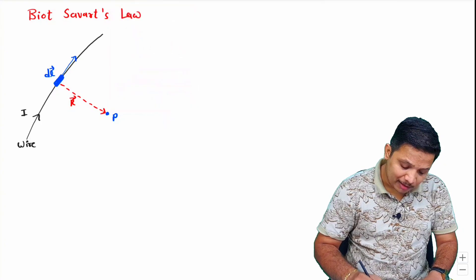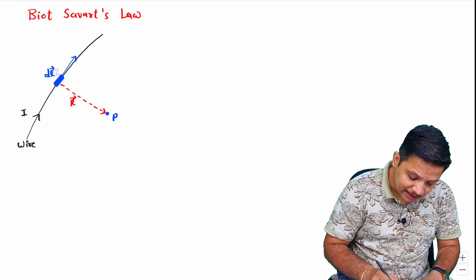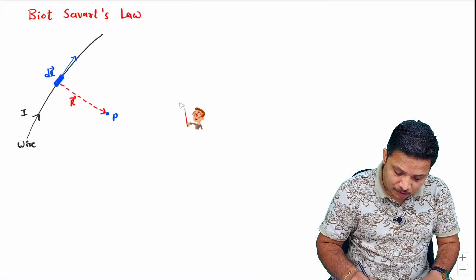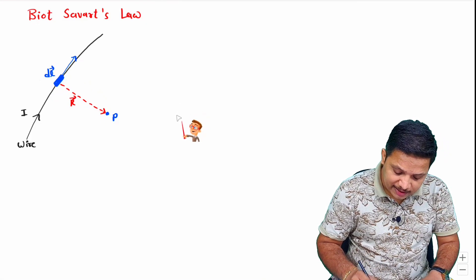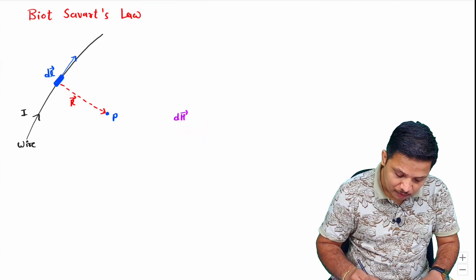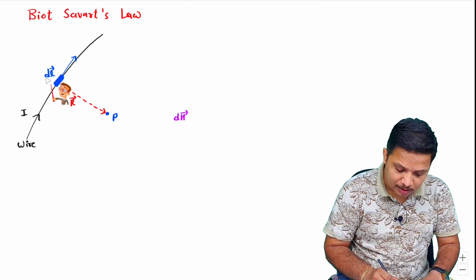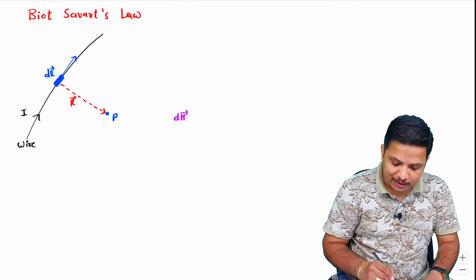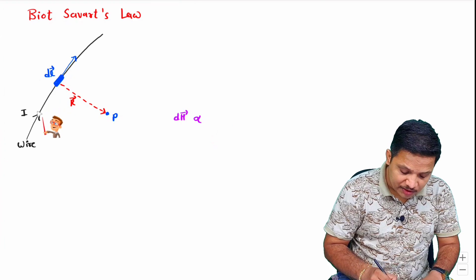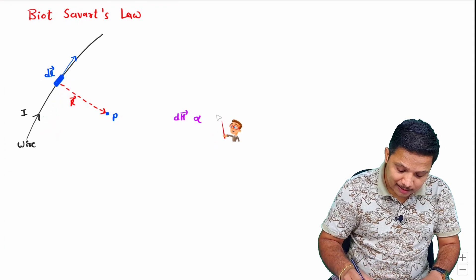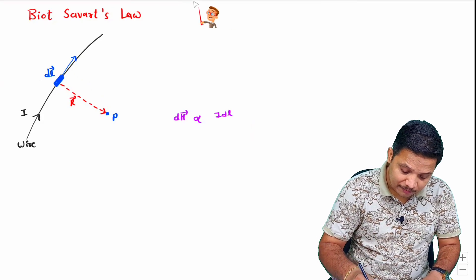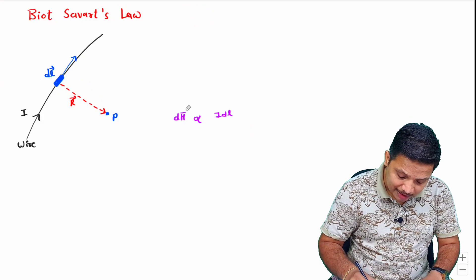We want to calculate the magnetic field intensity due to small differential length DL, so that magnetic field intensity will be DH — it is not for the complete wire, it is for small differential length DL. It is directly proportional to the differential current length IDL, and first we will be calculating the magnitude.